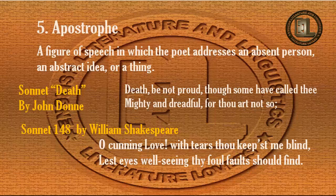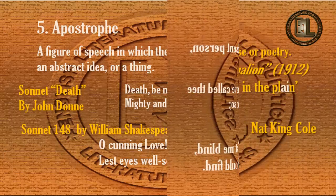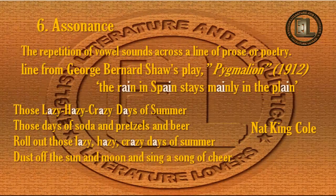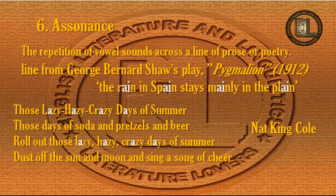The next term is assonance. What is assonance? It is the repetition of vowel sounds across a line of prose or poetry. Look at this line taken from George Bernard Shaw's play Pygmalion: 'The rain in Spain stays mainly in the plain.' The vowel sound 'ai' has been repeated throughout the line.